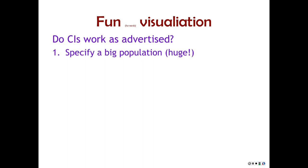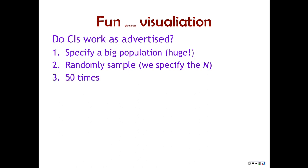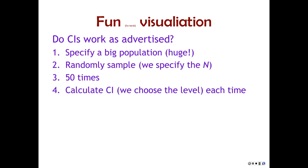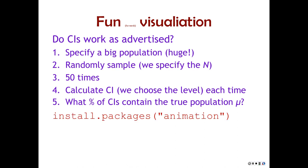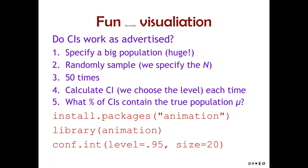We can do a fun little visualization. We can specify a big population in R, randomly sample with a particular sample size — this one will do it 50 times — and calculate a confidence interval for each of those 50 samples. Then we can count what percentage of those confidence intervals actually contain the true population mean. If you run this code, we'll be able to do this demonstration.